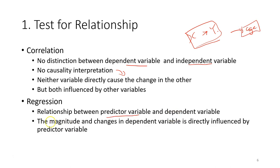For regression, it's the investigation of the relationship between predictor variable and dependent variable. You have the x and y variables. It's different from correlation where both variables are independent. The magnitude and changes in the dependent variable are directly influenced by the predictor variable. That's the reason why this test usually constructs a model. For example, y is the dependent variable and x is the predictor variable.